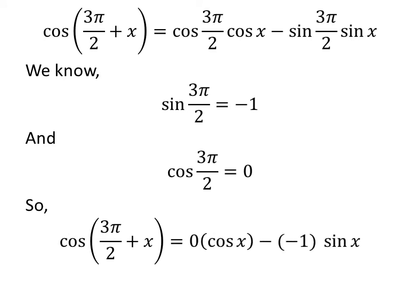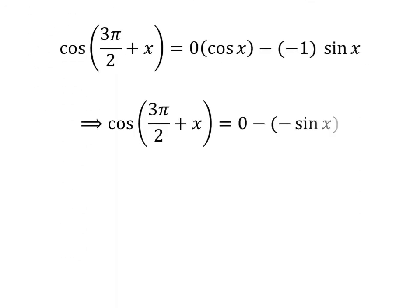Let us replace the value of sine of 3 times pi upon 2 and cosine of 3 times pi upon 2 in the above expression. So we got cosine of 3 times pi upon 2 plus x is equal to 0 times cosine of x minus of minus 1 times sine of x. As 0 times cosine of x is equal to 0, and minus 1 times sine of x is equal to minus sine of x.